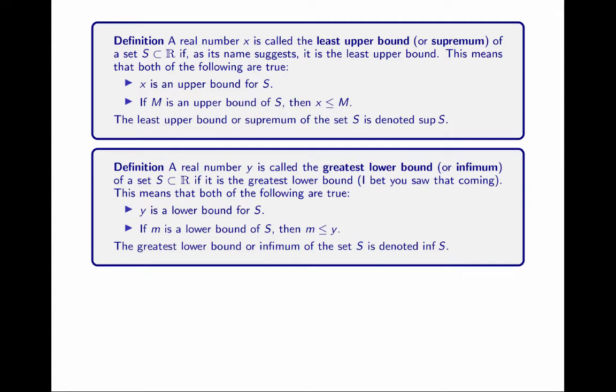The best way to think about it is as least upper bound, because that's a really explicit definition — the definition is the name. I imagine you can guess what the greatest lower bound is, or infimum. The greatest lower bound is, of all lower bounds, the greatest one. So if Y is the greatest lower bound of a set S, then Y is a lower bound and it's greater than or equal to all other lower bounds. We'll also call this the infimum or inf, but even when we write inf or infimum, we should read to ourselves: greatest lower bound. Because again, the name is the definition.